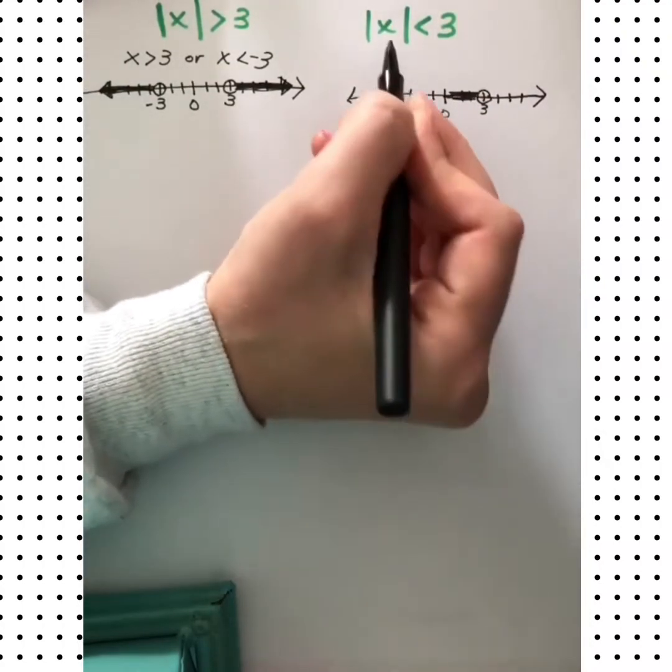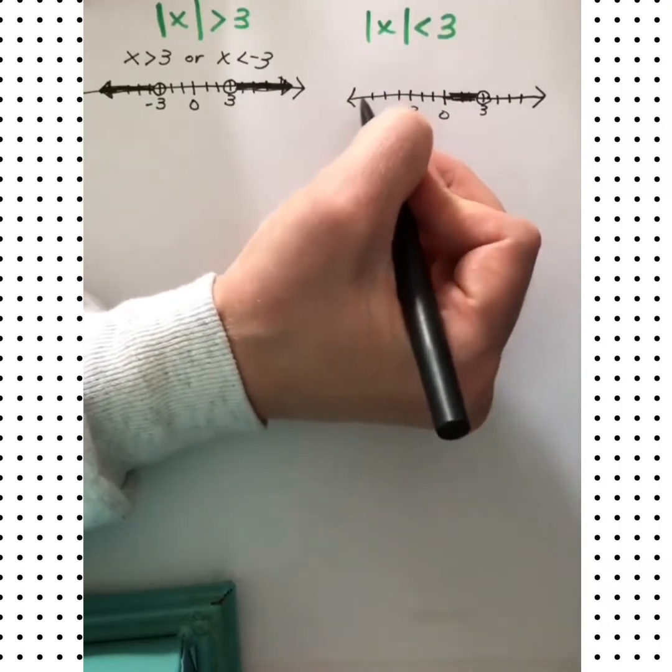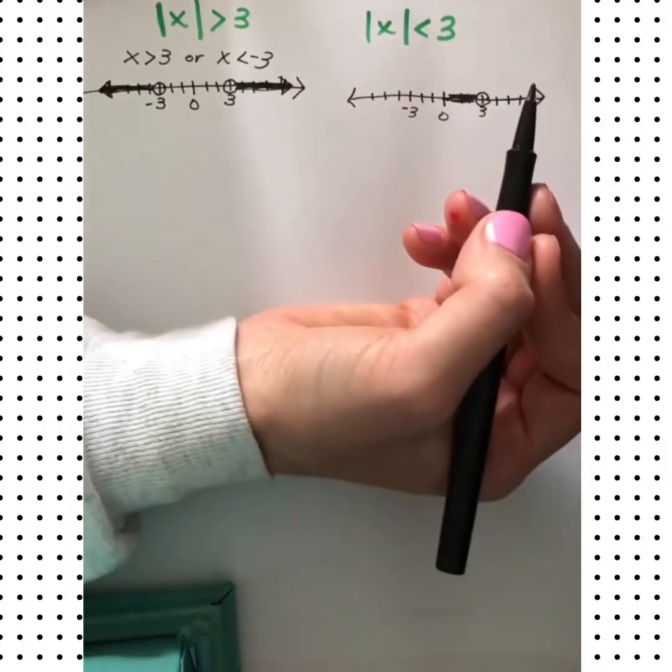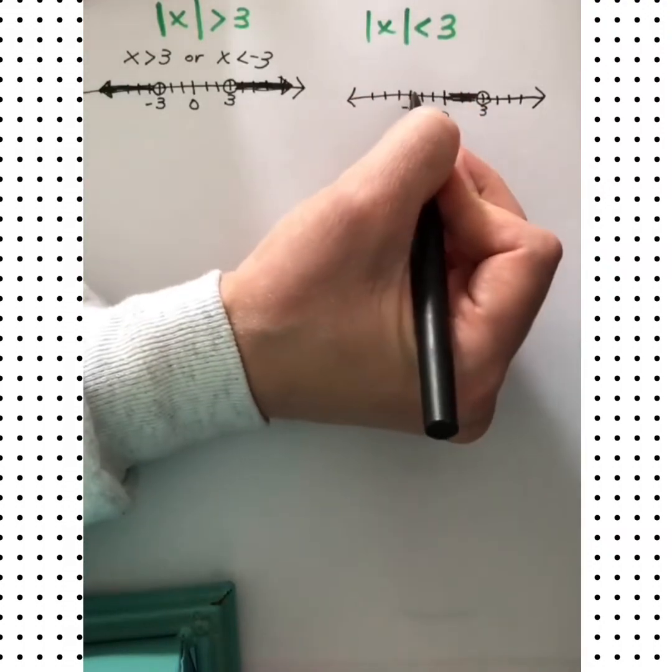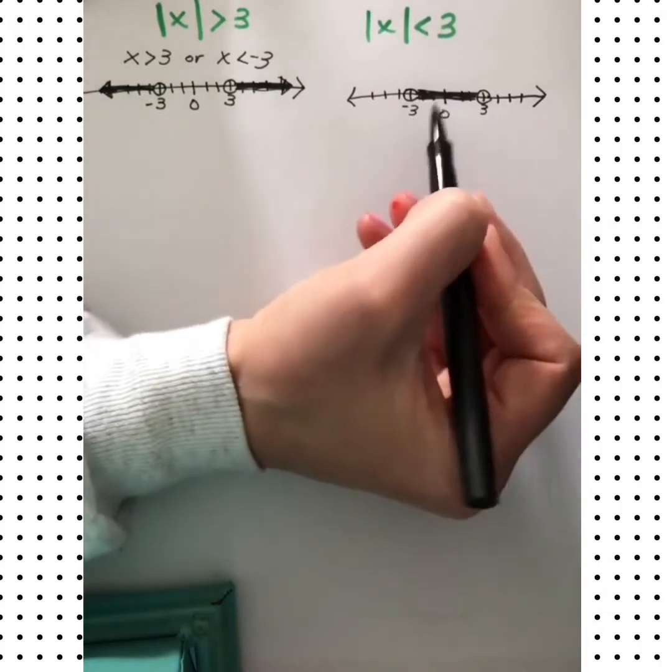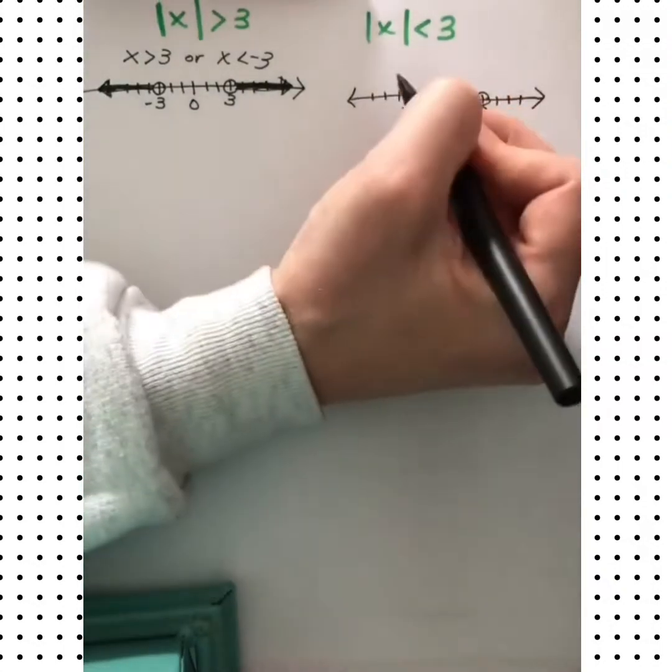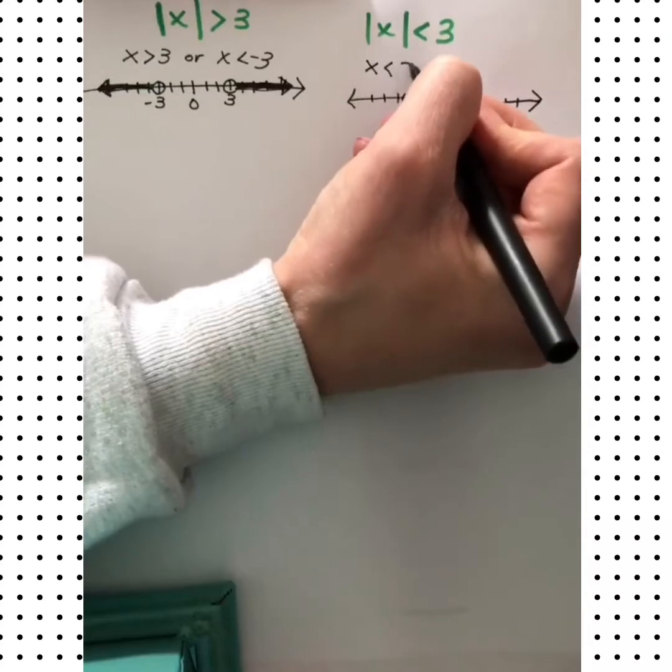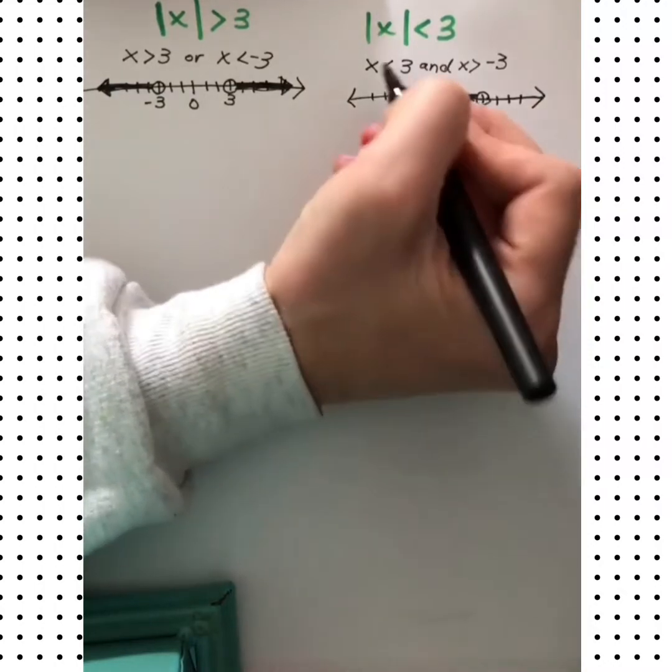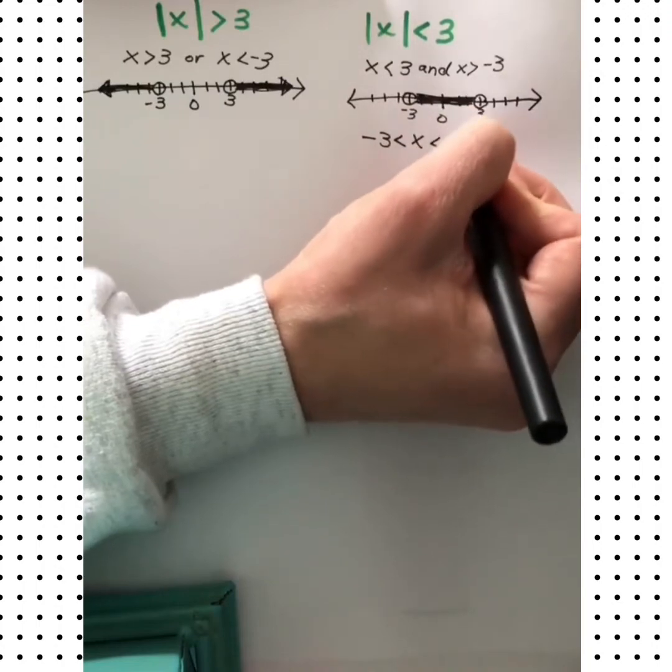Will negative 1 work? Yep. Negative 2? Yep. But how about these way over here? Negative 4, is the absolute value of negative 4 less than 3? No, because 4 is not less than 3. So this time we will stop at the negative 3. All of these values in between work for this inequality. So we want to say that x has to be less than 3 and greater than negative 3. We could also write the compound inequality like that.